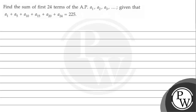Hello, let's read the question. The question says: find the sum of first 24 terms of the AP A1, A2, A3 and so on, given that A1 plus A5 plus A10 plus A15 plus A20 plus A24 is equal to 225.